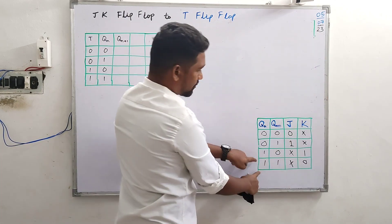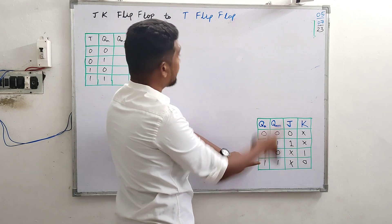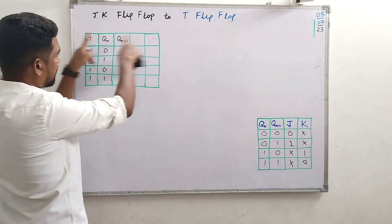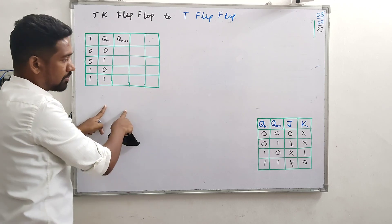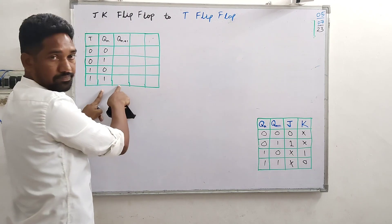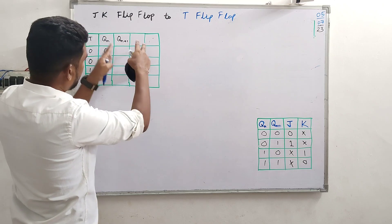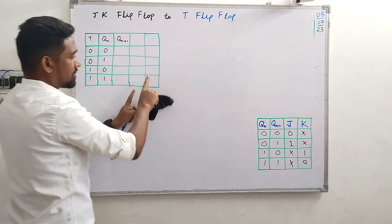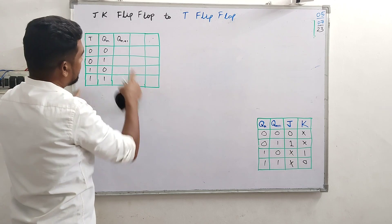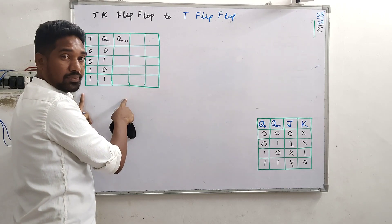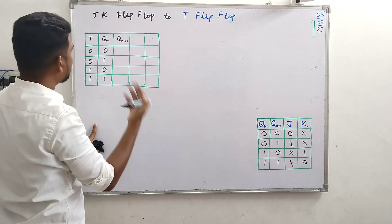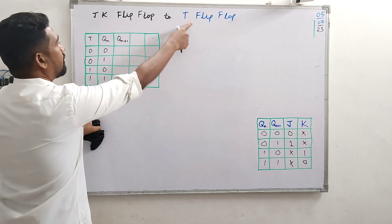If you build the excitation table of the JK flip-flop as the given flip-flop, we need to plug those excitation values in. For the table form construction, we need the inputs, the truth table of the required flip-flop in the first half, and the excitation table of the given flip-flop — here JK flip-flop — in the second half. Now let's construct it for the JK to T flip-flop conversion.